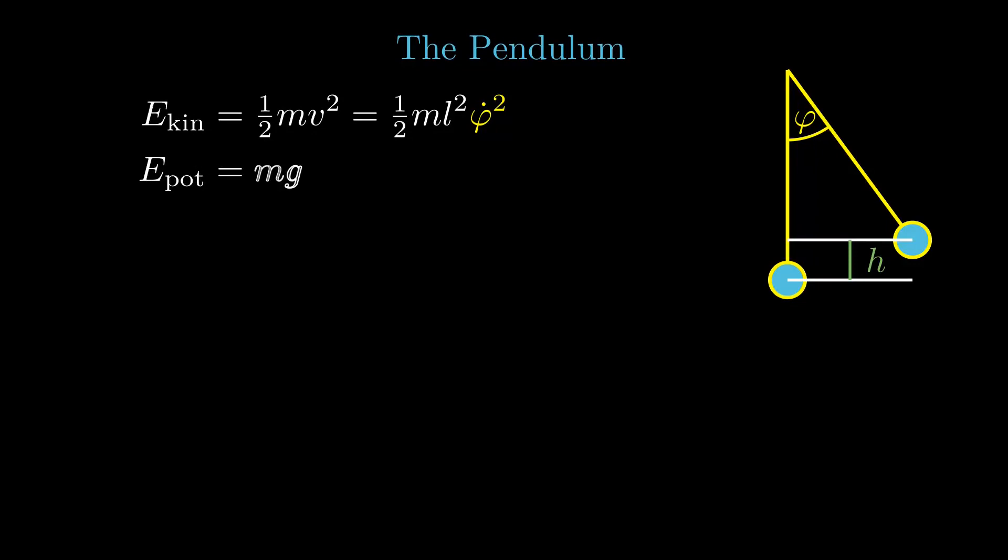Now we are ready to apply this concept to another simple physical system. A mass suspended to a light stick that can rotate around a pivot point. The kinetic energy of the mass depends on the rate of change of the angle of rotation. The potential energy depends on the height where the mass is lifted up to.